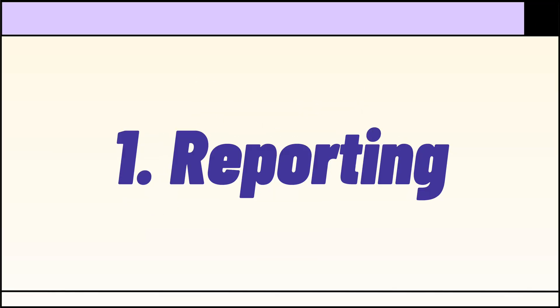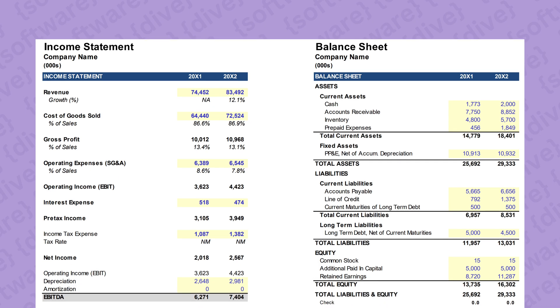Use case number one: reporting. Every company has to do reporting to investors, to the board, to even different department heads. Abicom allows you to do that, but not in the bog-standard way that finance teams typically do it — which is literally sending around a PDF with your three financial statements every month or so.